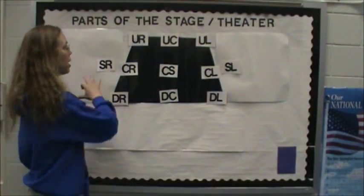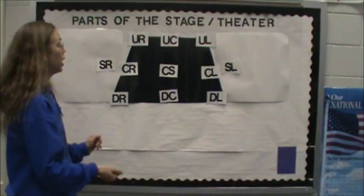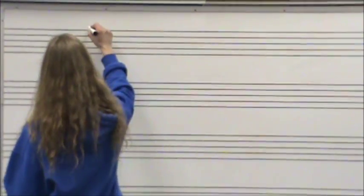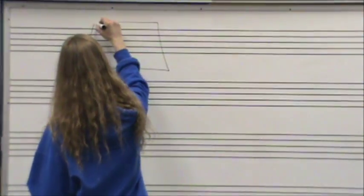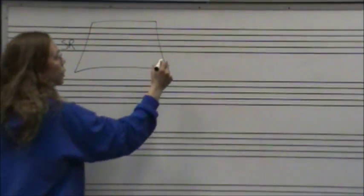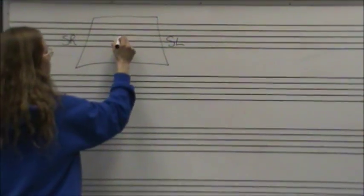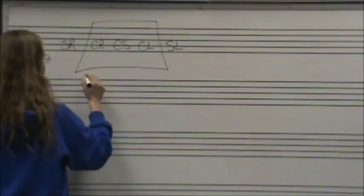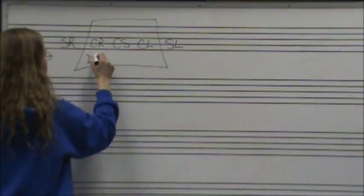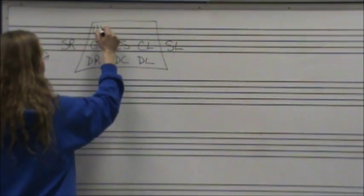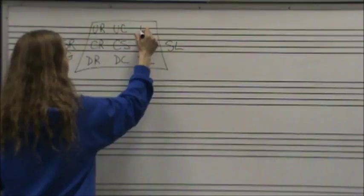So now that we have all the abbreviations labeled, and hopefully you've drawn your stage and labeled it too, I'm going to show you all the other parts that are behind the stage and in front of the stage. So now I'm going to redraw the stage and label all the parts. Stage right. Stage left. Center stage. Center stage right. Center stage left. Downstage right. Downstage center. Downstage left. Upstage right. Upstage center. And upstage left.